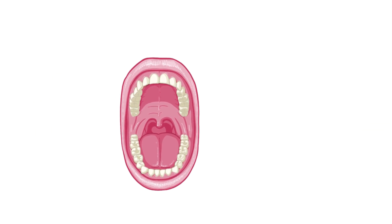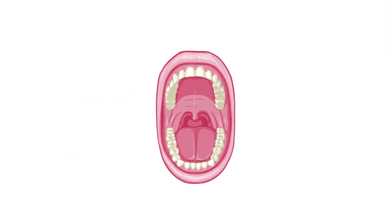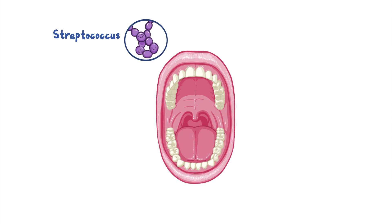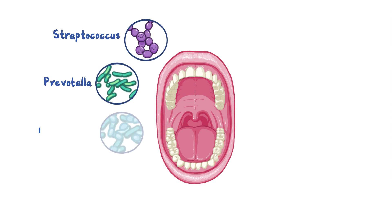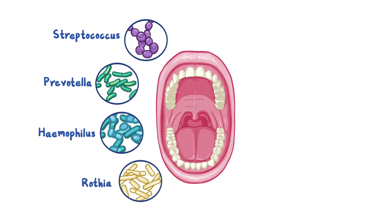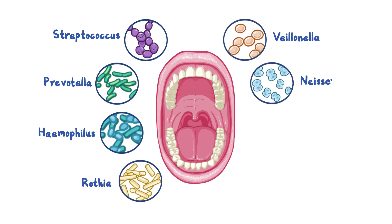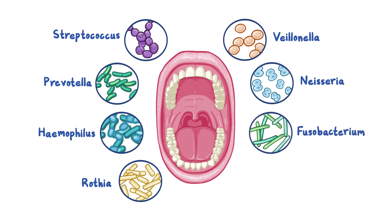The major genera with the largest representation in oral cavities include Streptococcus, Prevotella, Haemophilus, Rothia, Veillonella, Neisseria, Fusobacterium, and Porphyromonas.